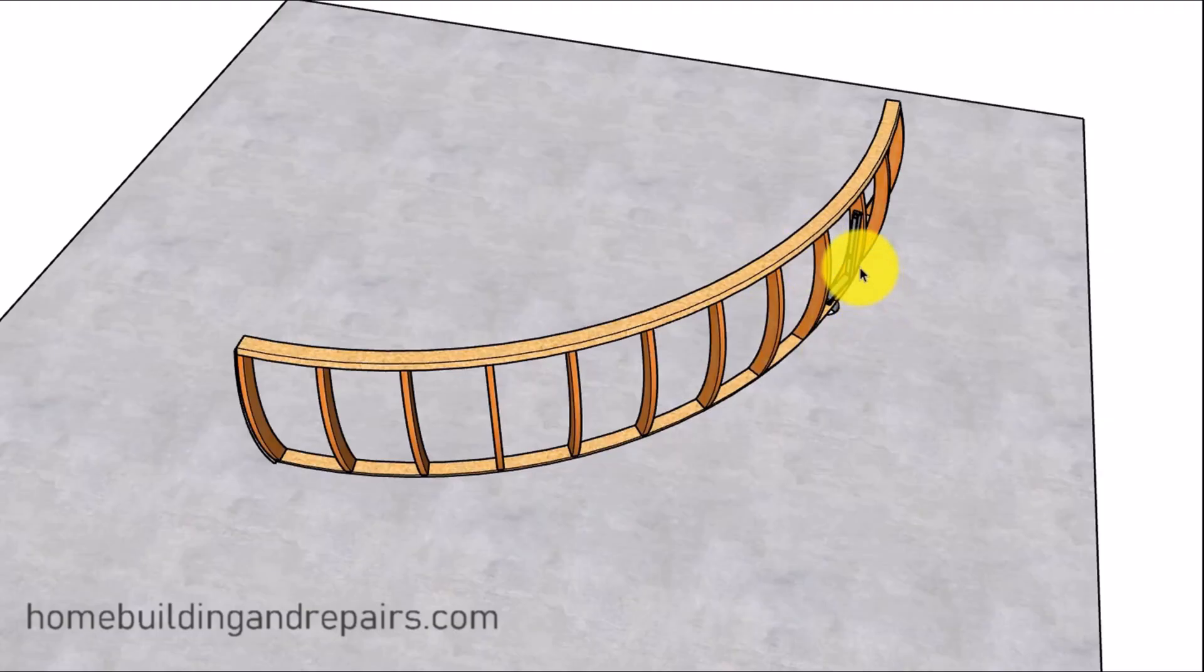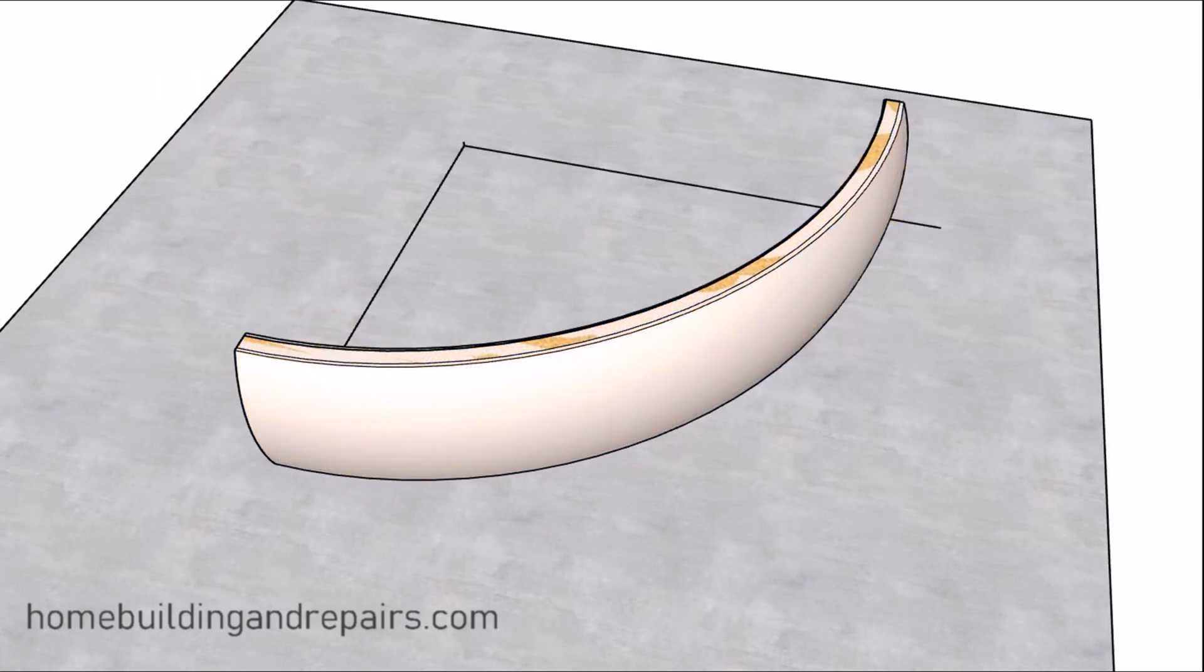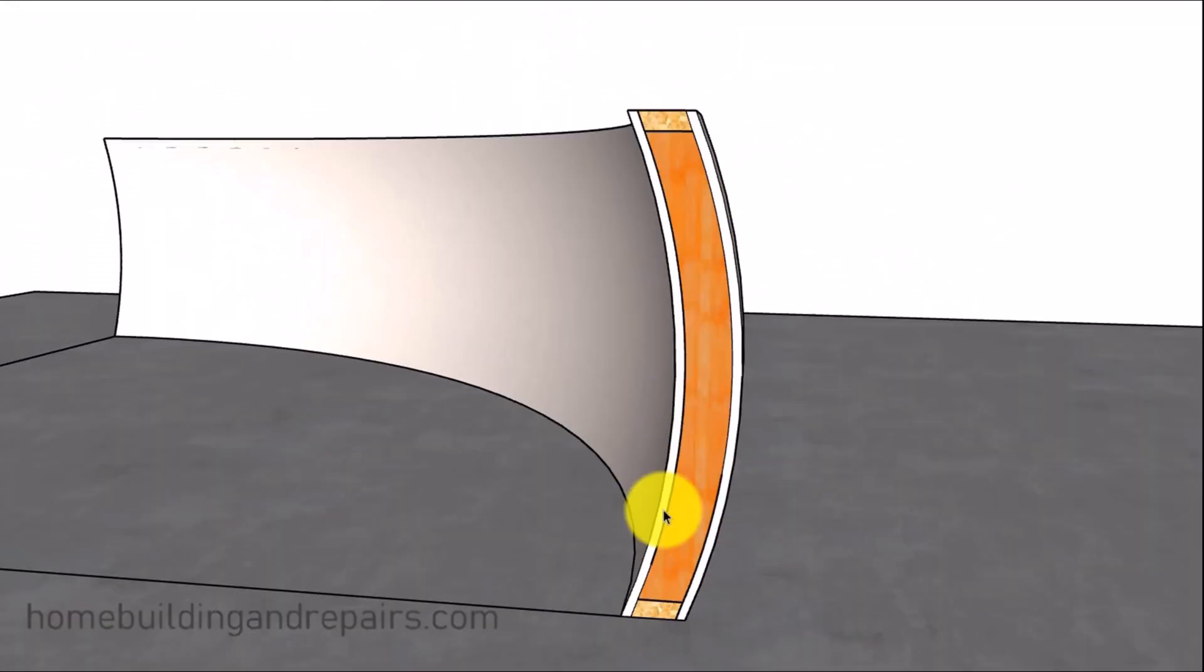Just throwing out some ideas here. If this is going to be braced up against something, so if this is going to be framed up against a wall, then you could always brace the ends to another section of the wall framing. Then maybe you could get away with just one brace in the center, depending upon how long the wall would be.